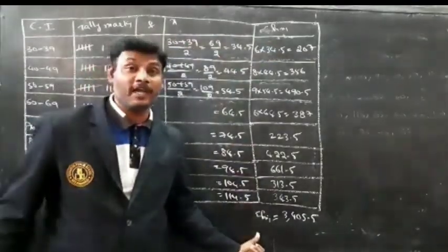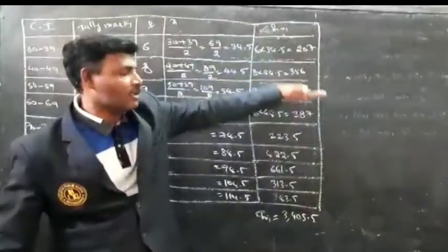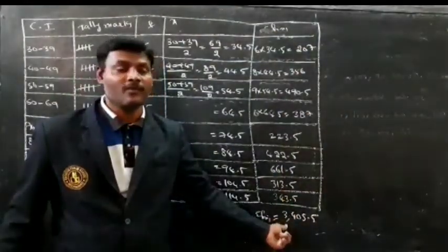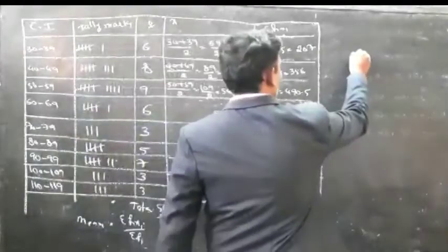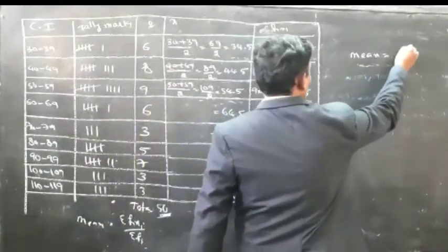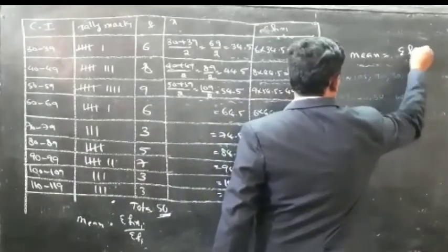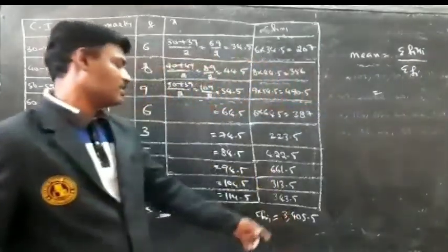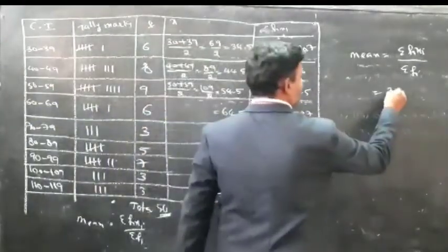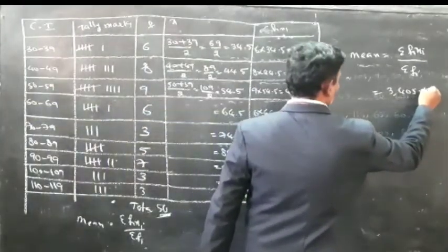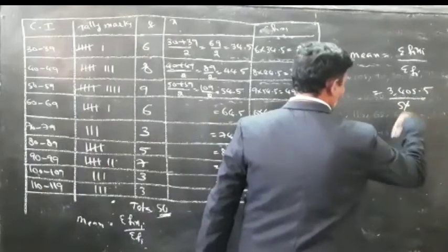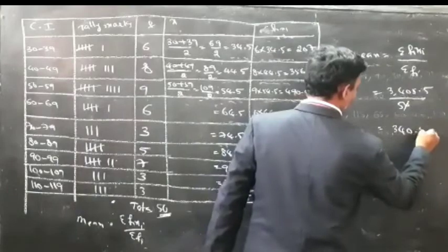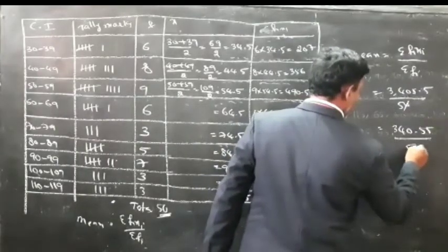Sigma FiXi means adding all these products together. The total is 3400.5. Then the mean equals Sigma FiXi divided by Sigma Fi, which is 3400.5 divided by 50.